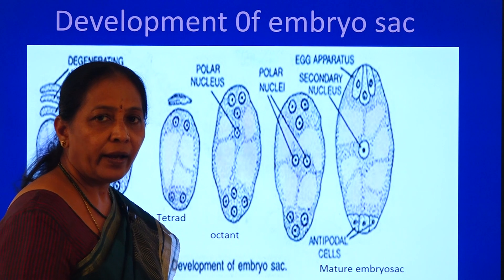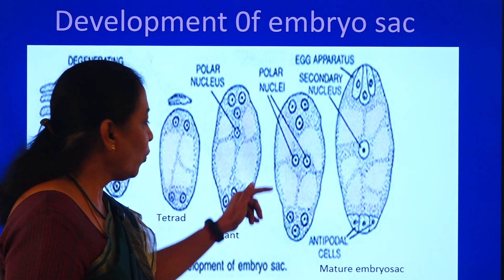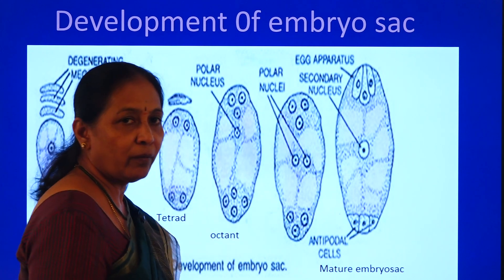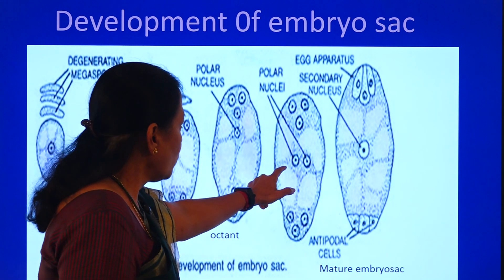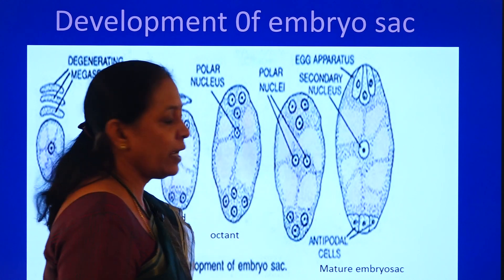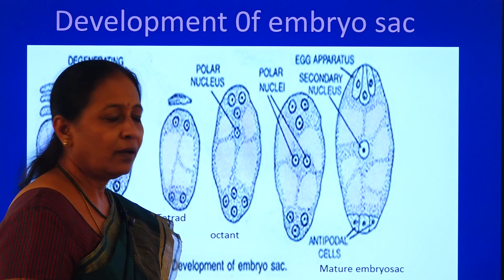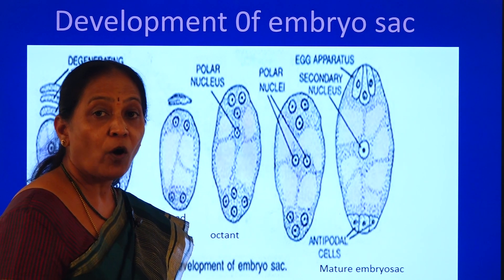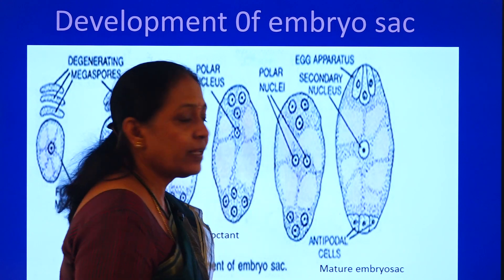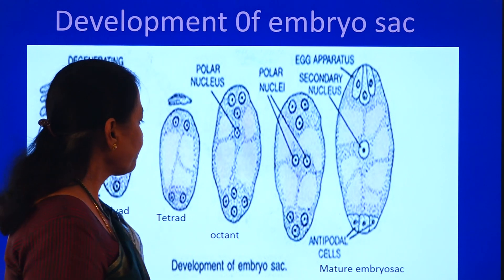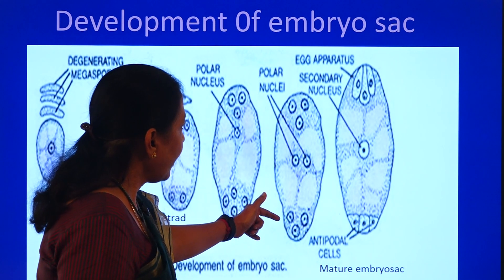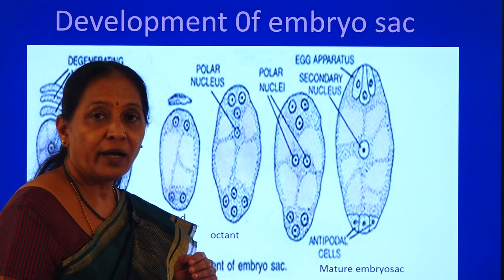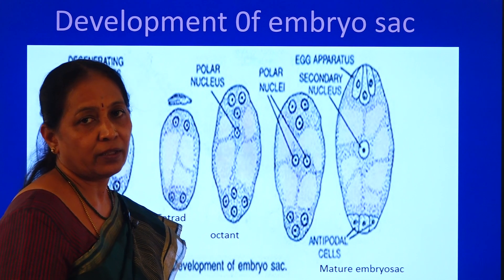A polar nucleus from each pole moves towards the center. They fuse to form the secondary nucleus. When the two nuclei fuse, they form a diploid nucleus — that secondary nucleus is always diploid. The three nuclei present towards the micropylar end get organized as the egg apparatus.